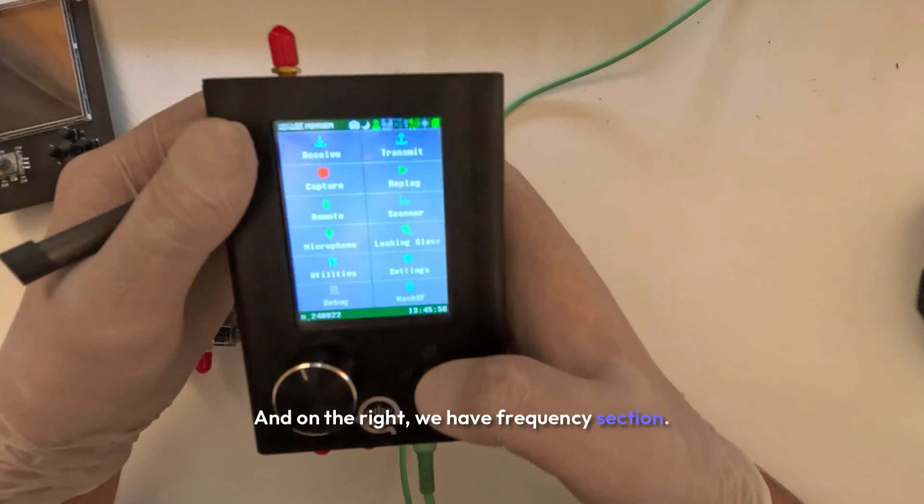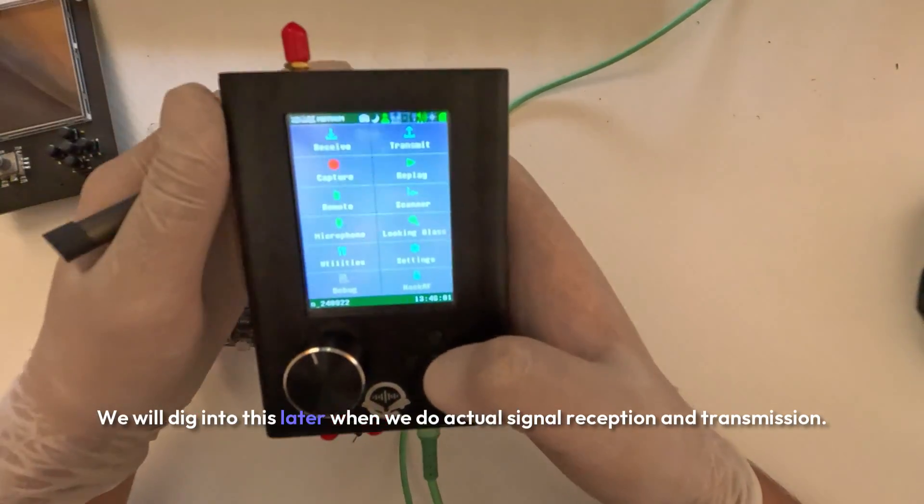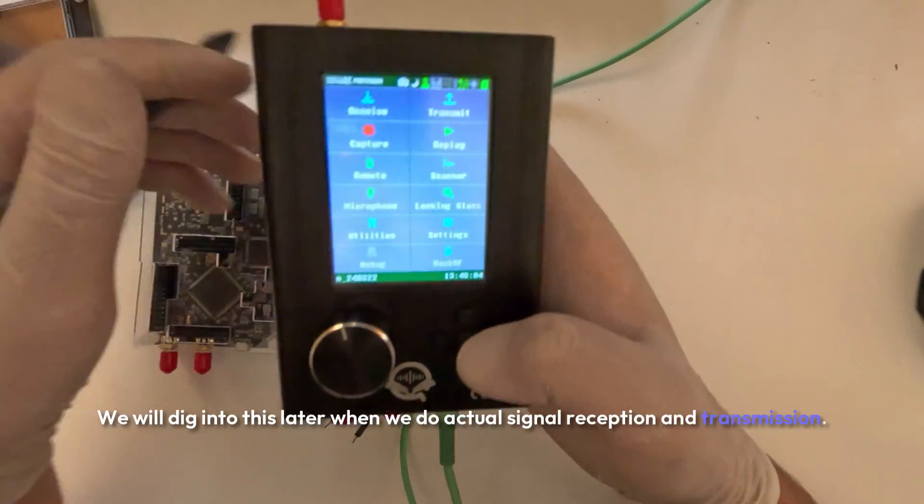And on the right we have the frequency section. This is where you tune your center frequency. We will dig into this later when we do actual signal reception and transmission.